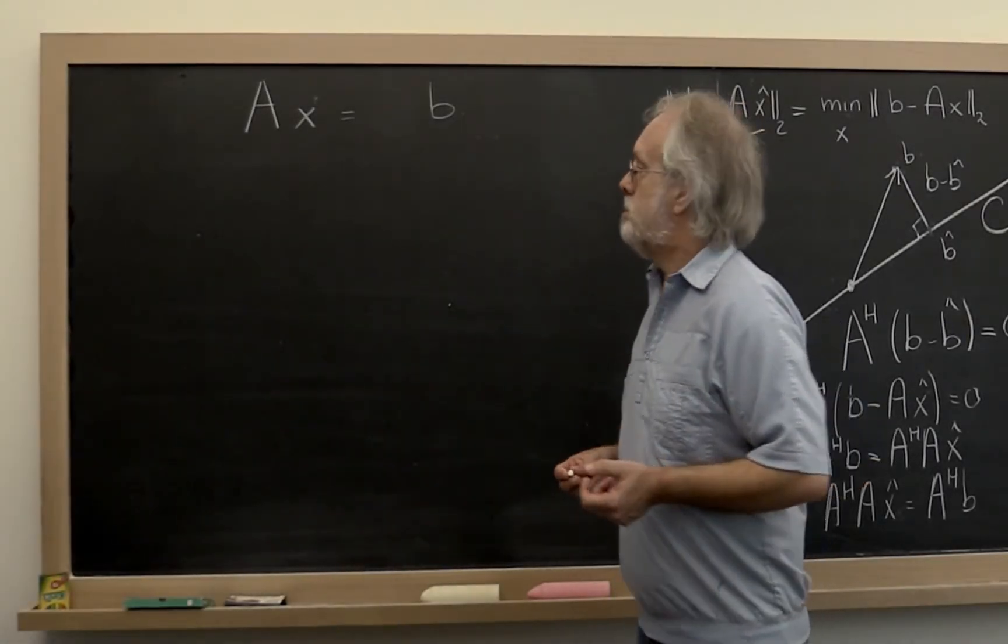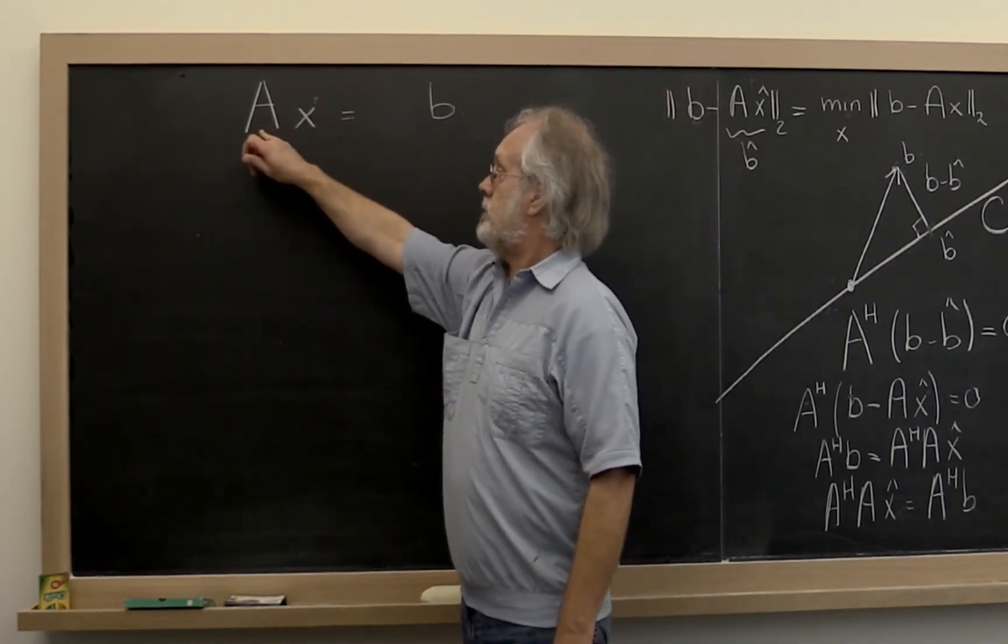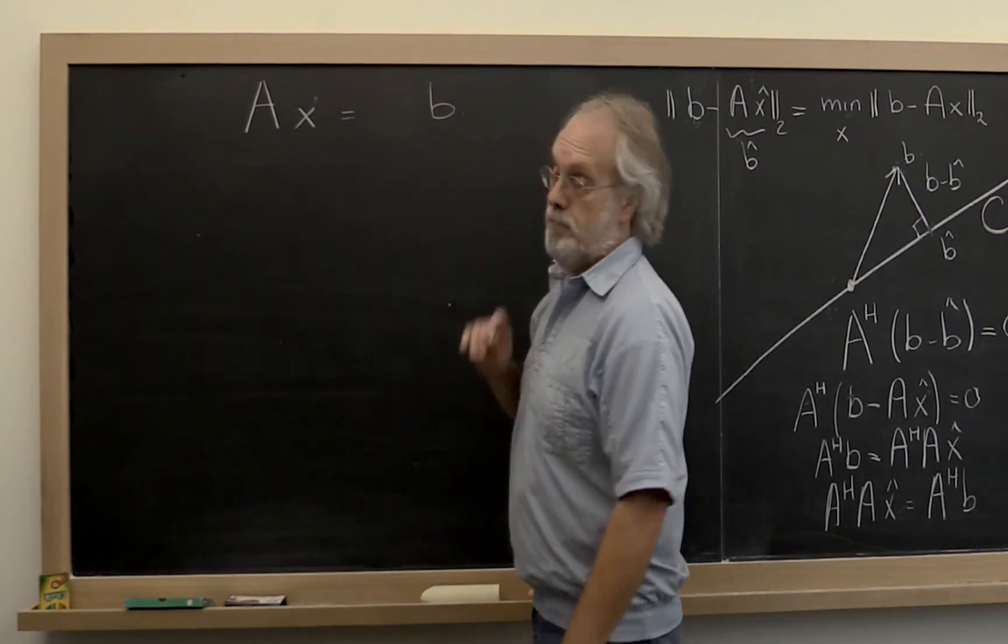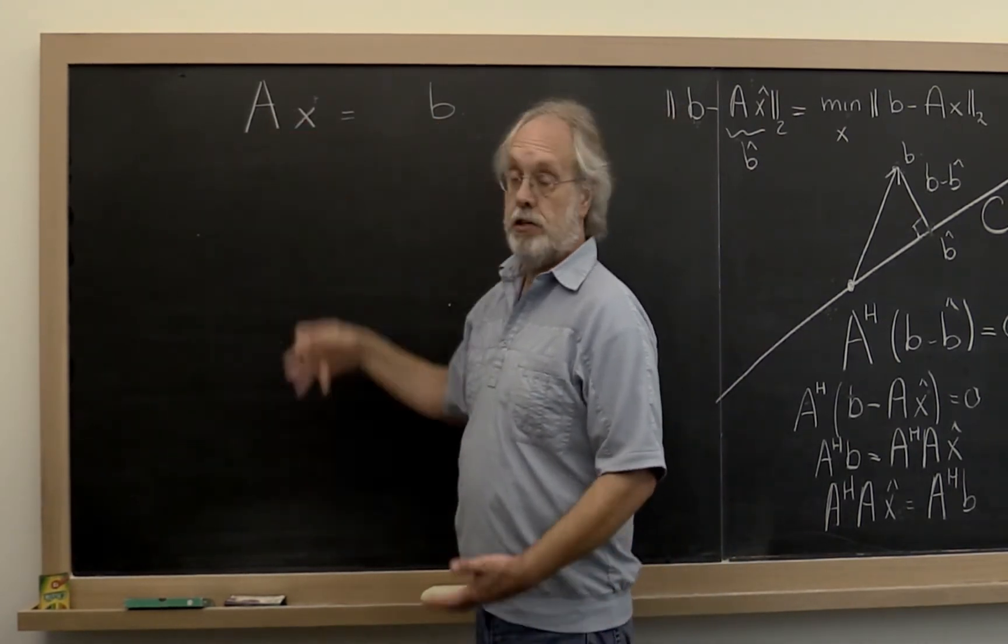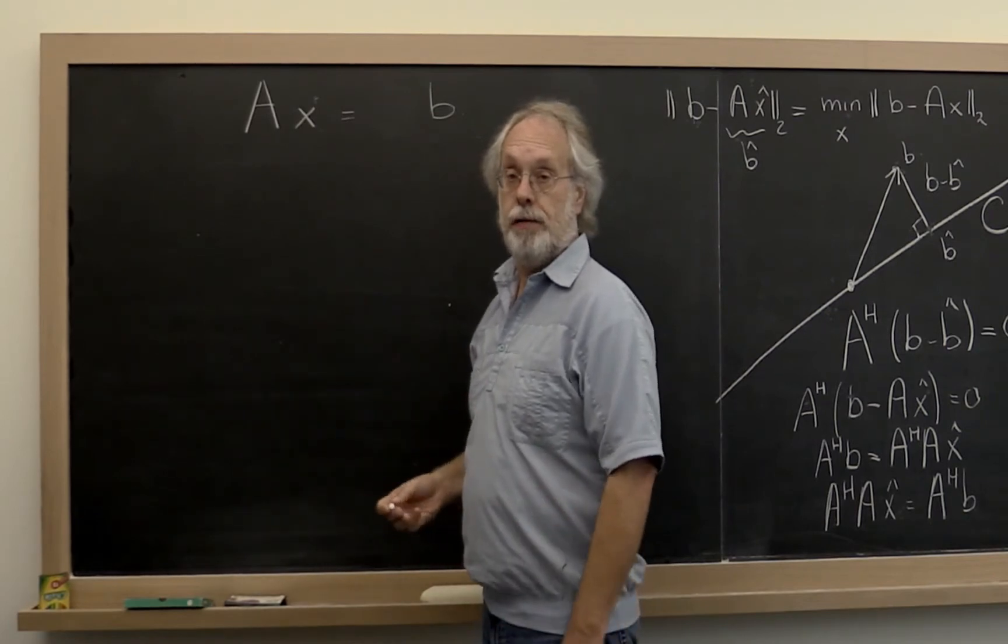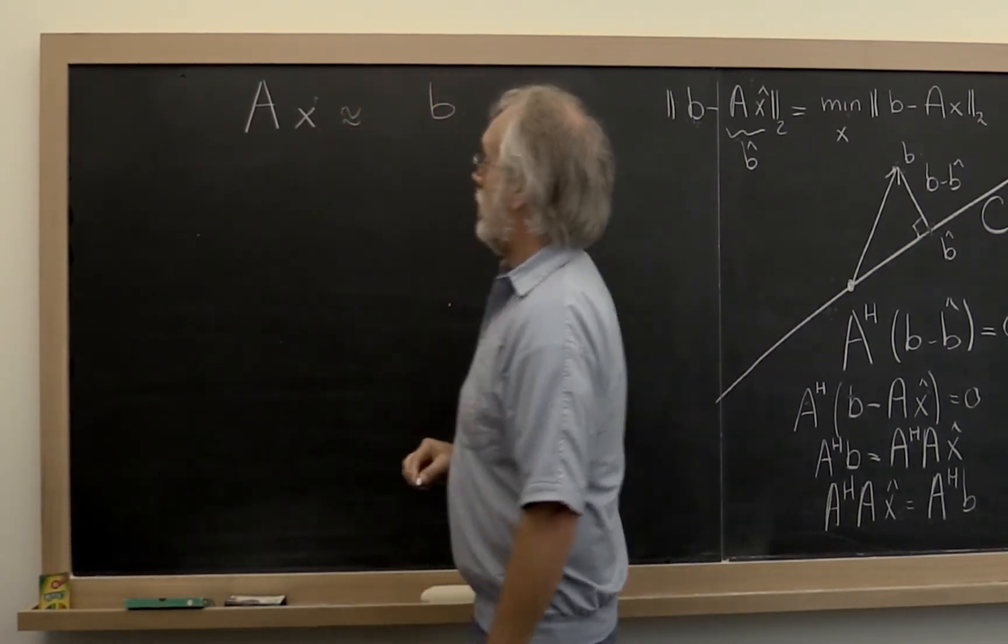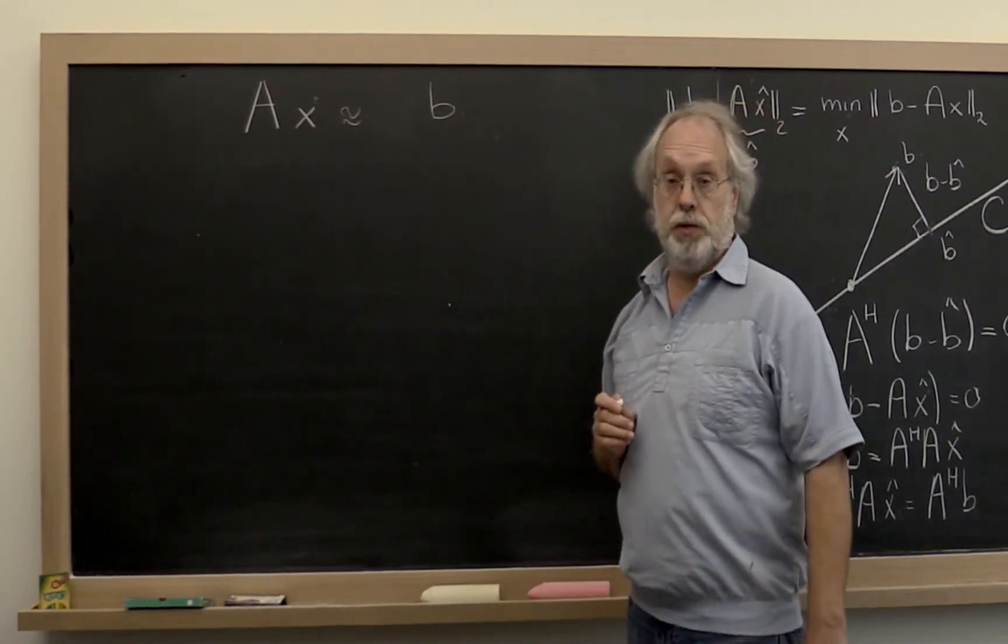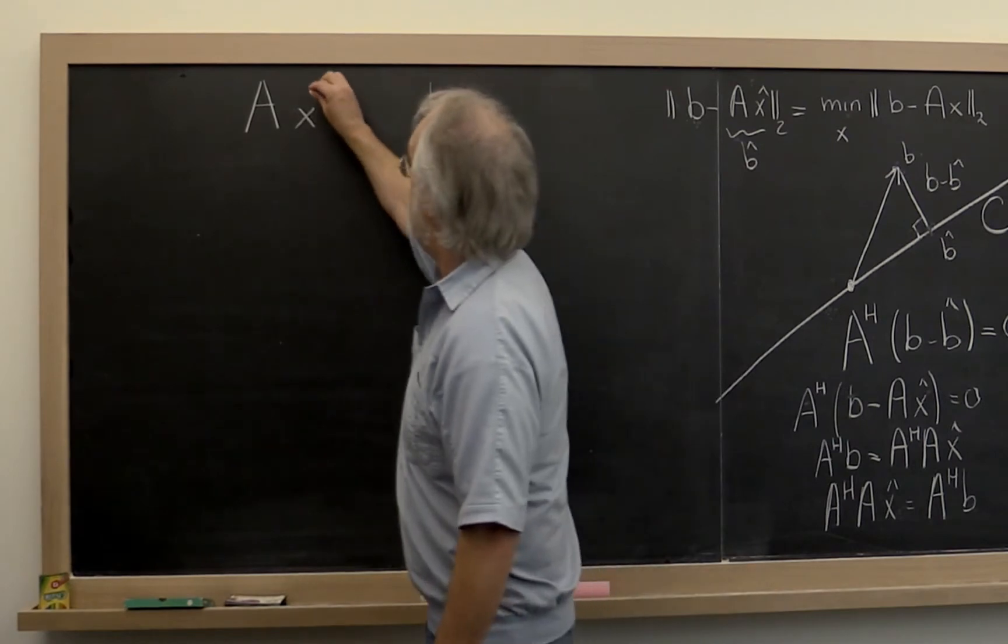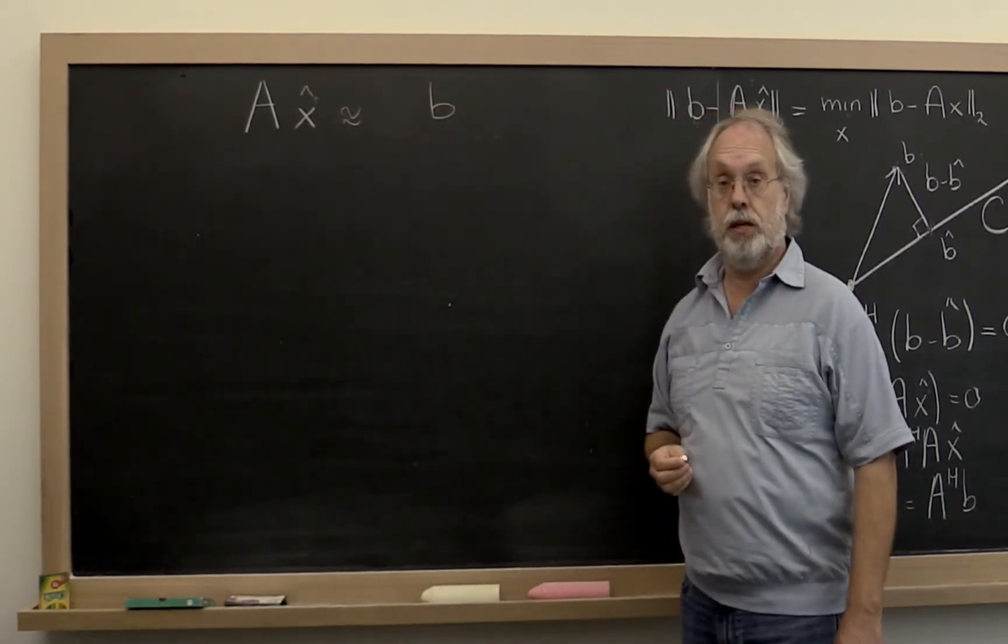Let's review how we got to this point. We wanted to solve a linear system AX equals B. But if A is overdetermined, if A has more rows than columns in it, then usually the best we can do is find the approximate solution AX equals approximately equal to B. And what we're interested in is the best solution for this.